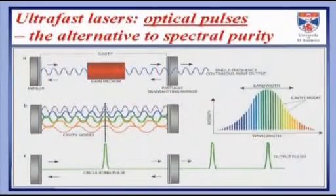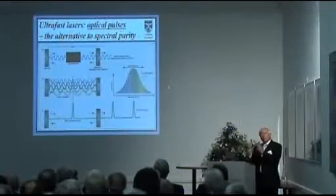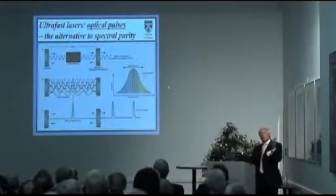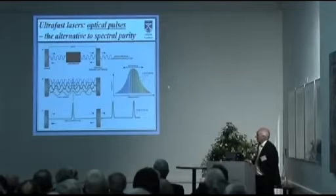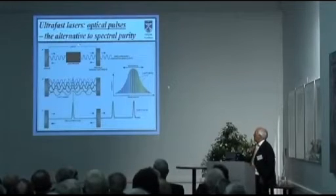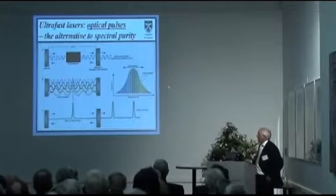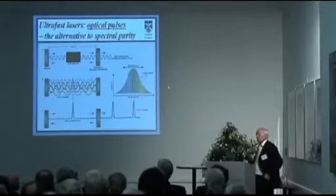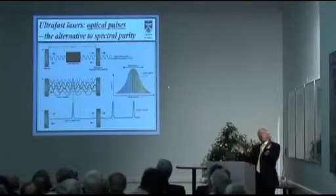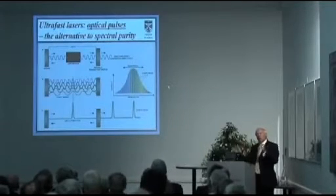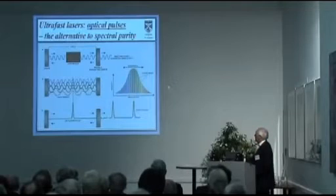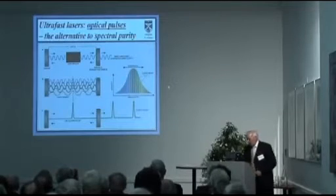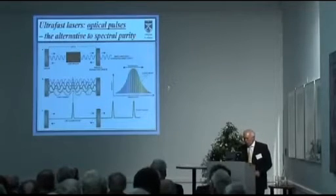So you've got the choice: either take one longitudinal mode and make your laser output spectrally very pure — the basis of narrow-line spectroscopy — or take many, many modes lasing above threshold, couple them together in phase, and get a periodic sequence of pulses. If it's a flash lamp-pumped laser, you get a finite train of these; if it's a CW laser, you get an infinite sequence.